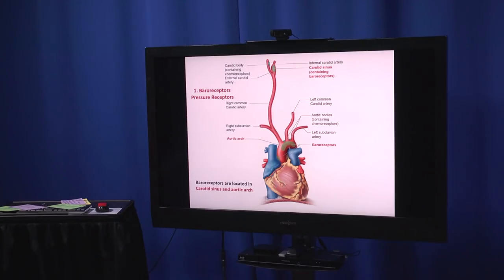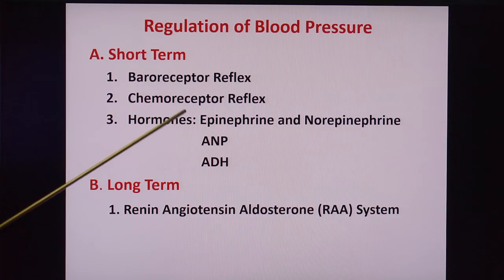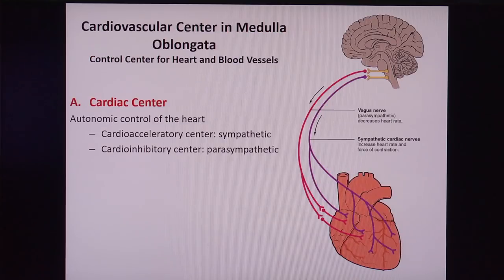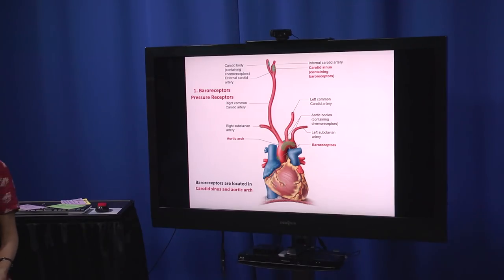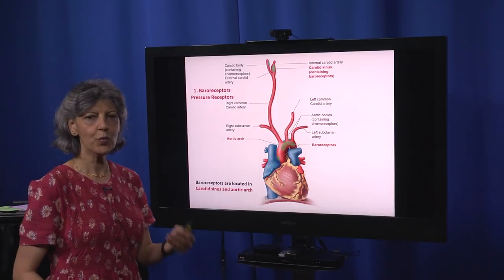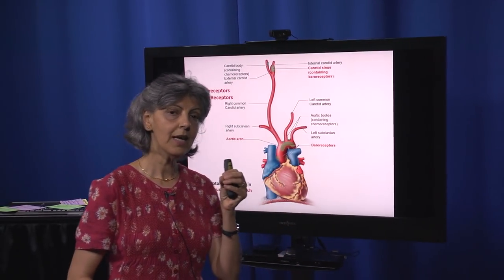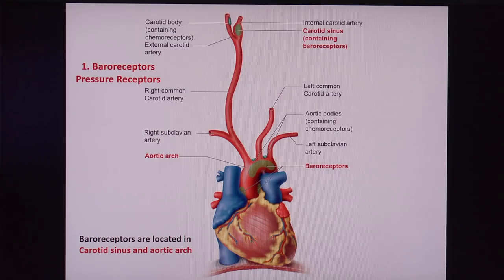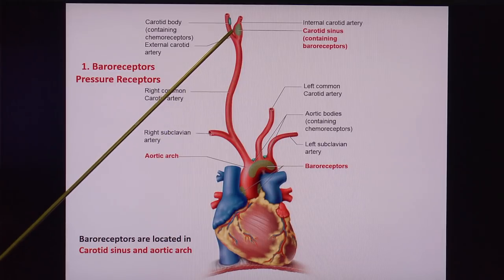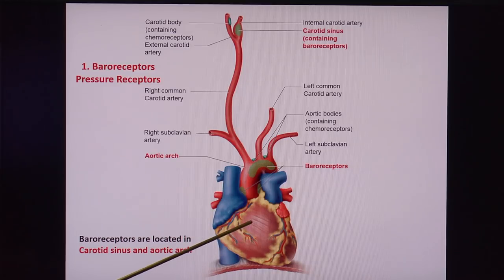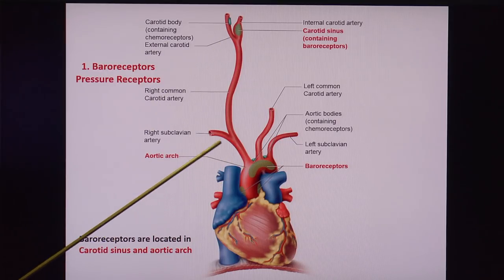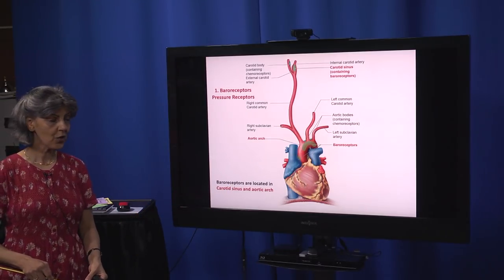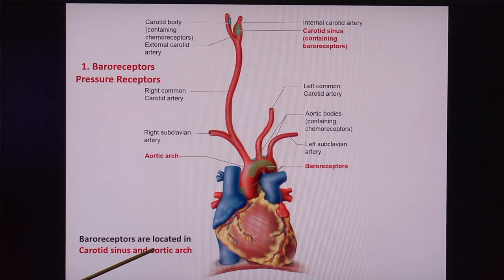Let's start talking about those detectors. We'll begin with the baroreceptors. 'Baro' means pressure, so a baroreceptor is a pressure receptor that detects changes in blood pressure. Where are they located? We have baroreceptors in the aortic arch and baroreceptors in the carotid sinus. Every time the ventricle contracts and pushes blood out, there is stretch on the wall of those vessels, and the baroreceptors detect whether this pressure is normal, higher, or lower.